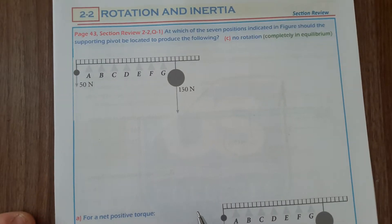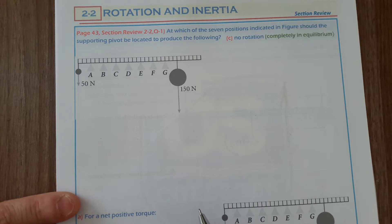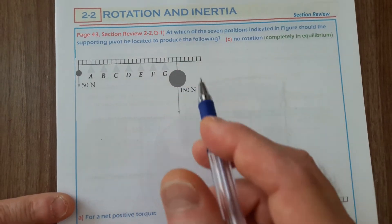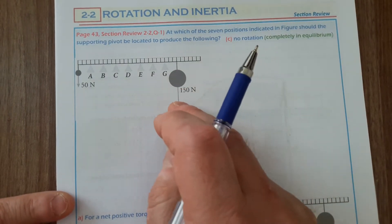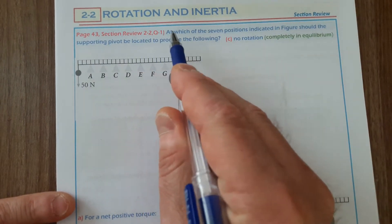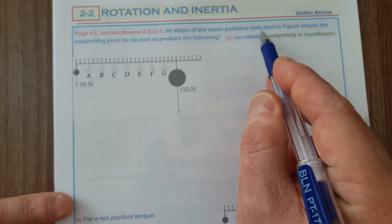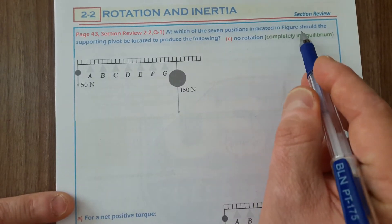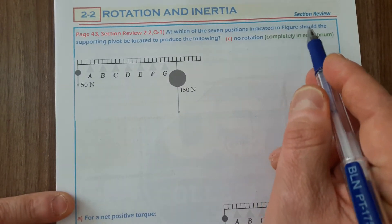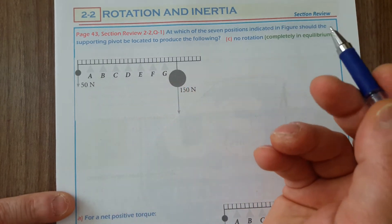Let's continue solving and answering some sectional questions. The first question asks: at which of the seven positions indicated in the figure should the supporting pivot be located to produce the following?